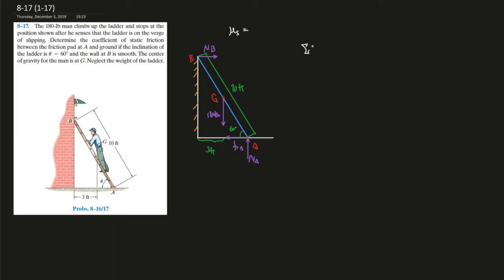Use the sum of the forces in the Y direction equals zero. We can always find the global equilibrium. So 180 pounds, this is NA going up minus the weight of the body equals zero, so NA should give you 180 pounds.